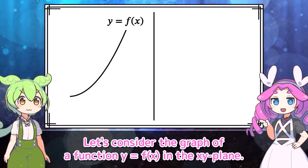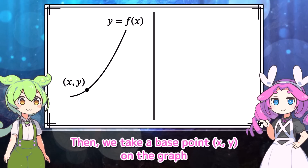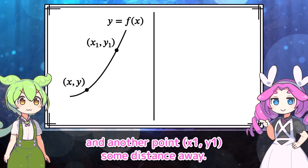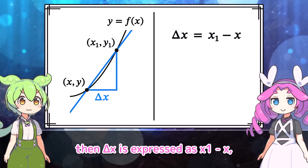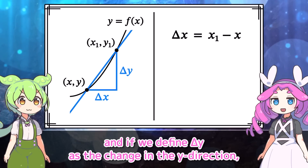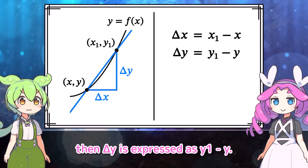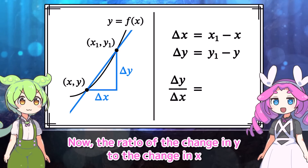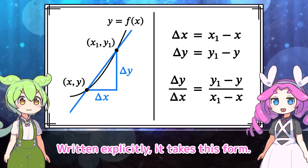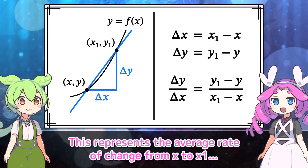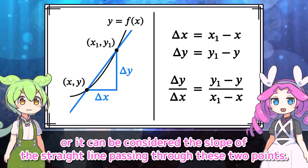Let's consider the graph of a function y equals f of x in the xy plane. We take a base point (x, y) on the graph, and another point (x₁, y₁) some distance away. If we define delta x as the change in the x direction, then delta x is expressed as x₁ minus x. And if we define delta y as the change in the y direction, then delta y is expressed as y₁ minus y. The ratio of the change in y to the change in x is expressed as delta y over delta x, representing the average rate of change from x to x₁, or the slope of the straight line passing through these two points.